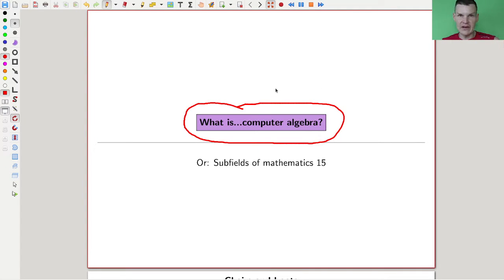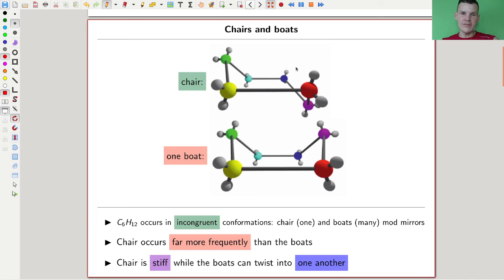Computer algebra for me is useful because I use it all the time and it's essentially about making algorithms work on a computer in the fastest way possible. So two steps: make it work on a computer and second in the fastest way possible. There is one example I would like to show you and it's actually from chemistry.